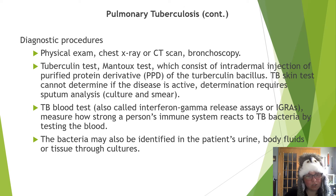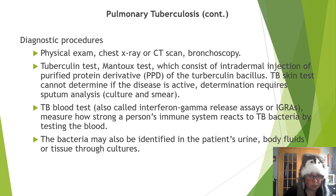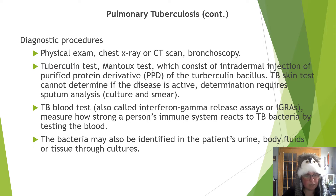To diagnose TB: physical exam, chest x-ray or CT scan, bronchoscopy, and the tuberculin test — also known as the Mantoux test — an intradermal injection just below the skin surface, usually on the forearm, containing purified protein derivative of the tuberculin bacillus. The TB skin test cannot determine if disease is active or dormant; a sputum analysis is needed for that. A TB blood test — the interferon gamma release assay — measures how strongly the immune system reacts to TB bacteria. Bacteria may also be identified in urine, body fluids, or tissue via cultures.